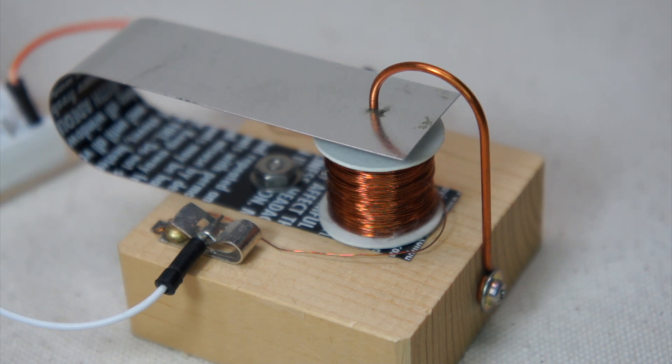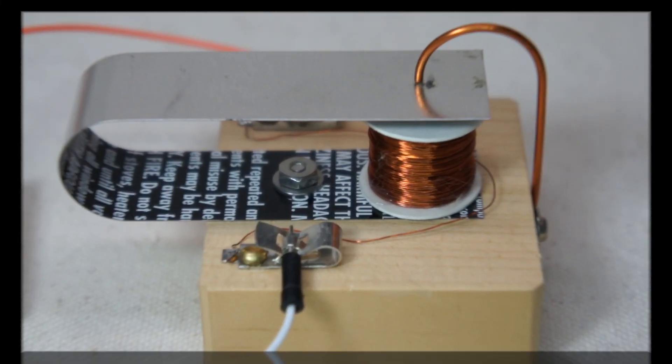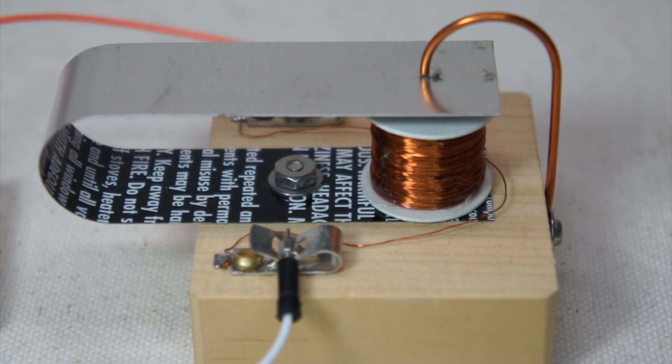And that's how we distinguish the Morse code from the sounds of the telegraph. Here is the sounder sending out an SOS signal. Three dots, then followed by three dashes, and finishing with three dots.